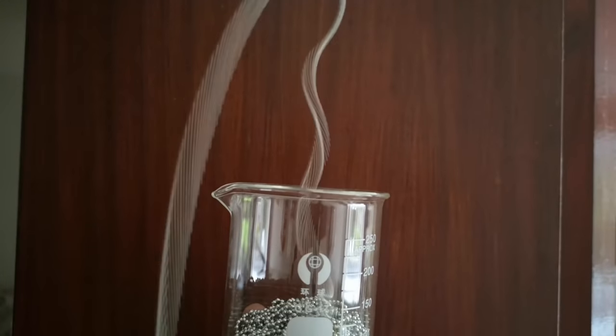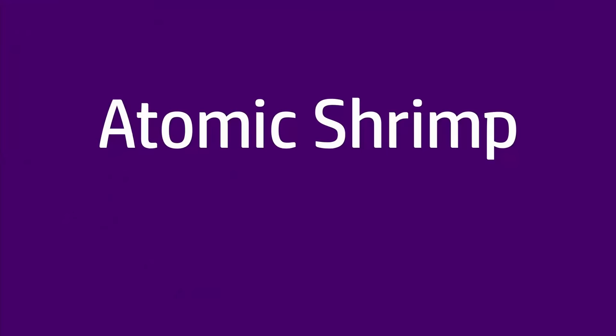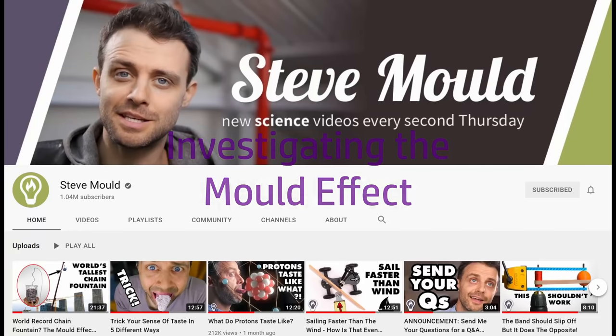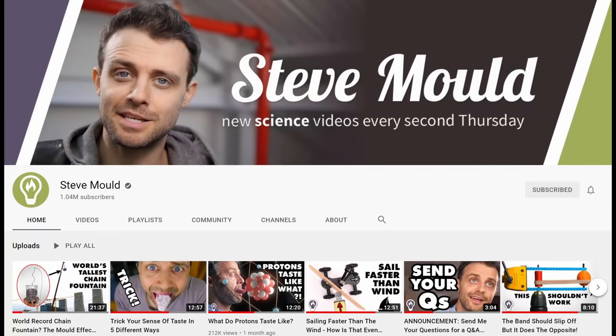I've got a beaker full of ball link chain here and when I do this, a loop of chain rises up out of the beaker which looks really weird. It's called the Mold Effect and it's named after Steve Mould, who's one of the YouTubers that I mentioned just now.